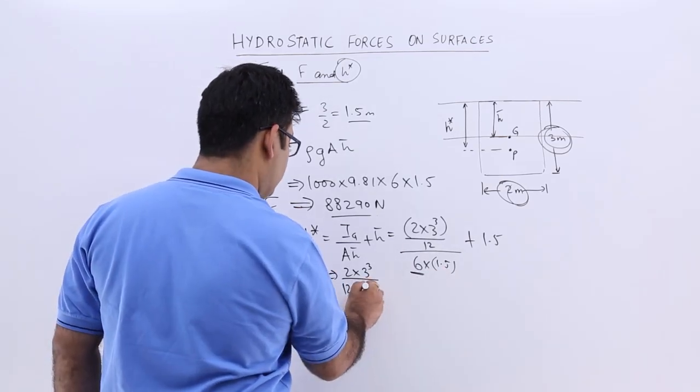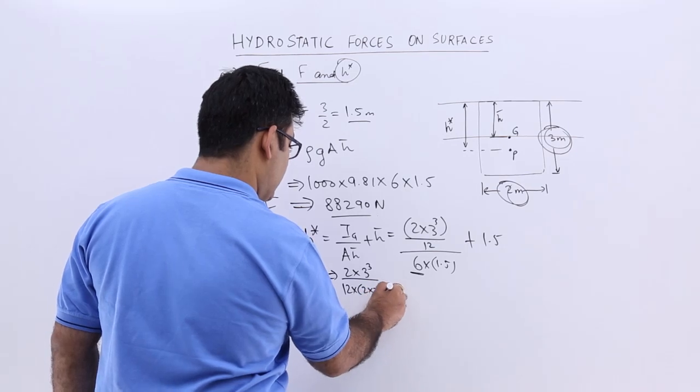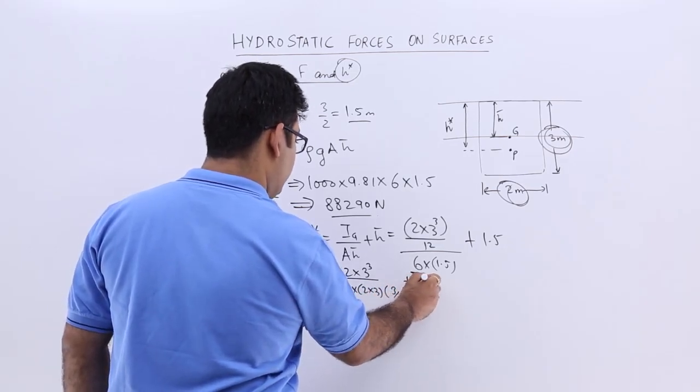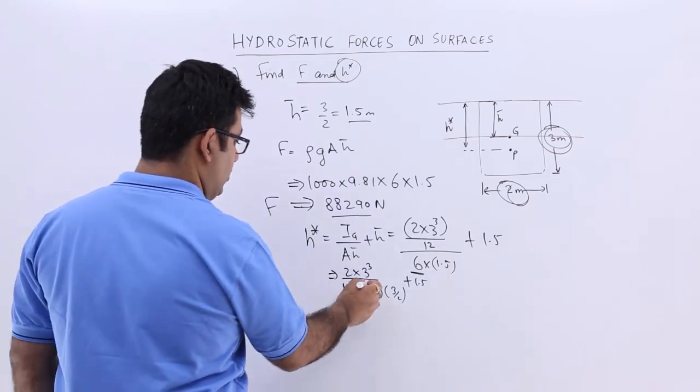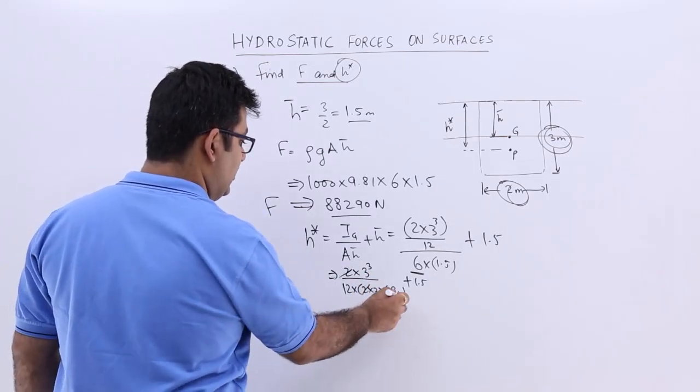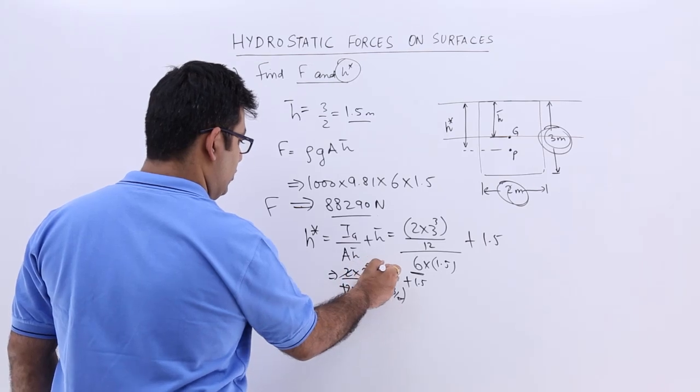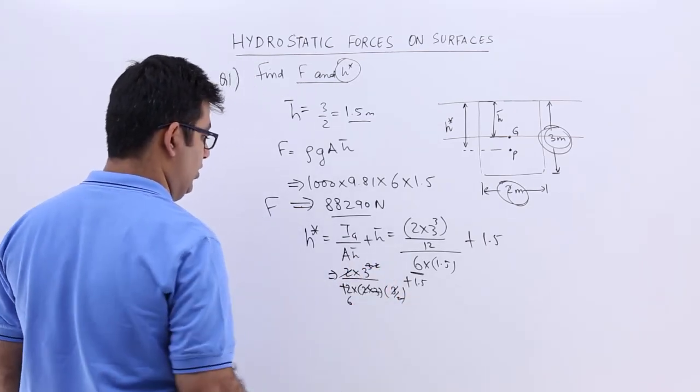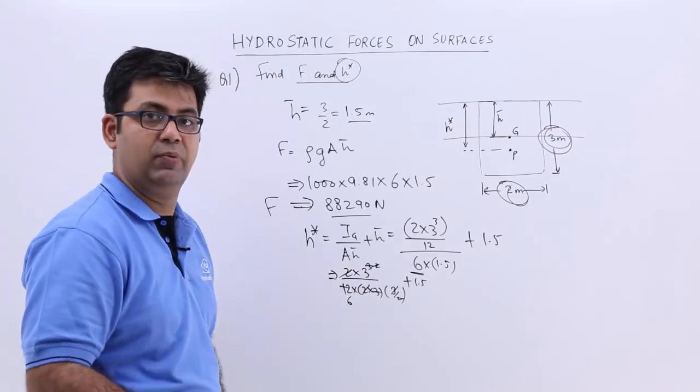so this will be 2 into 3 into 3 by 2, plus 1.5. So 2 and 2 can get cancelled off, this can go 6, this will become 2, this is gone and again gone. So you have 3 by 6 which is 1 by 2,